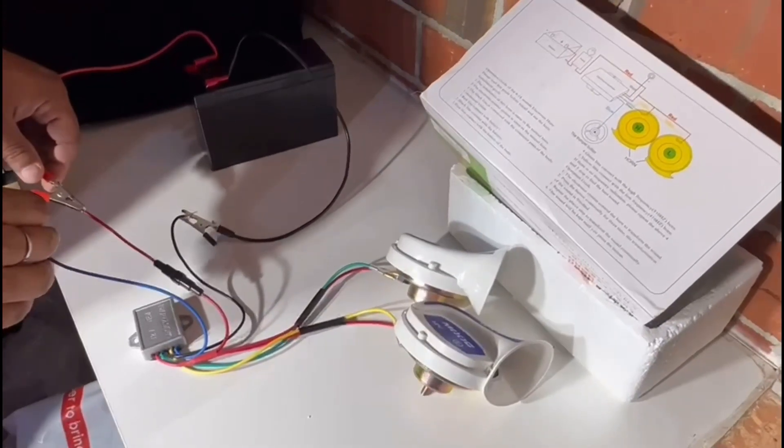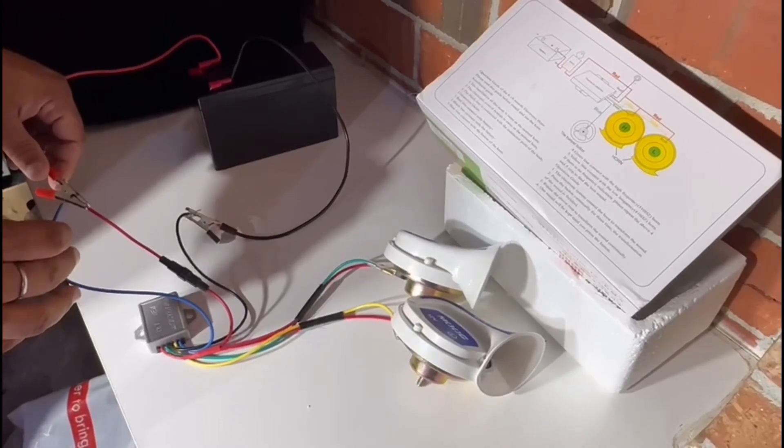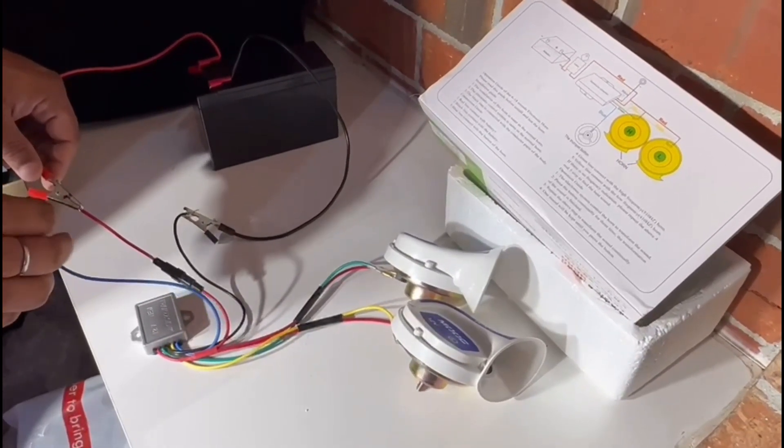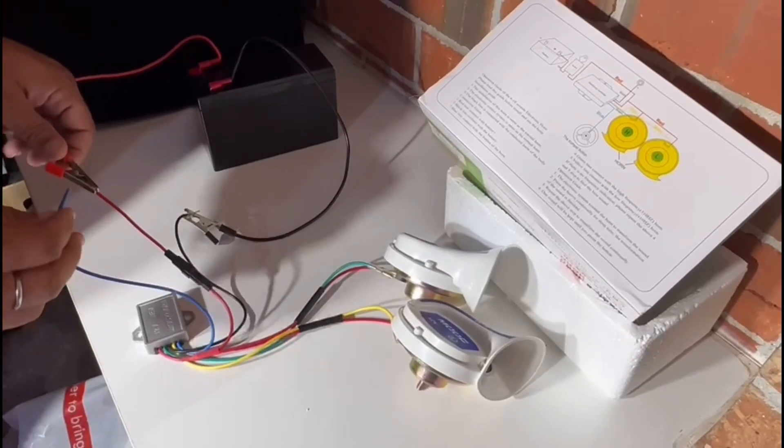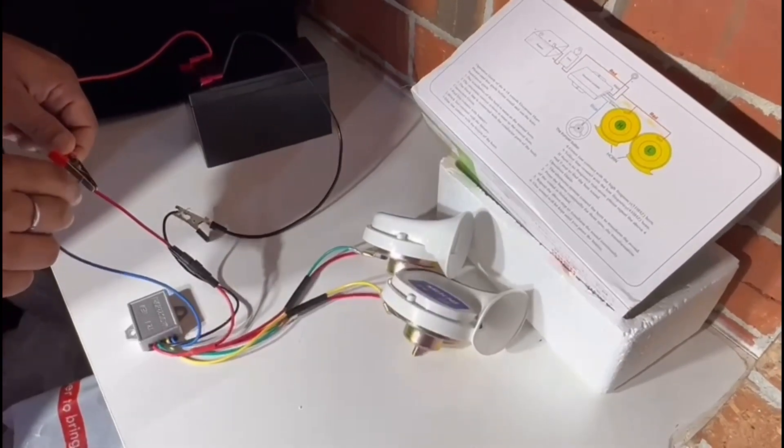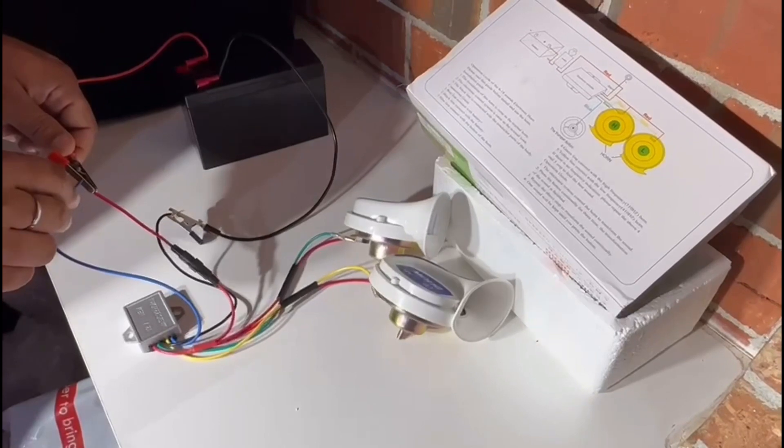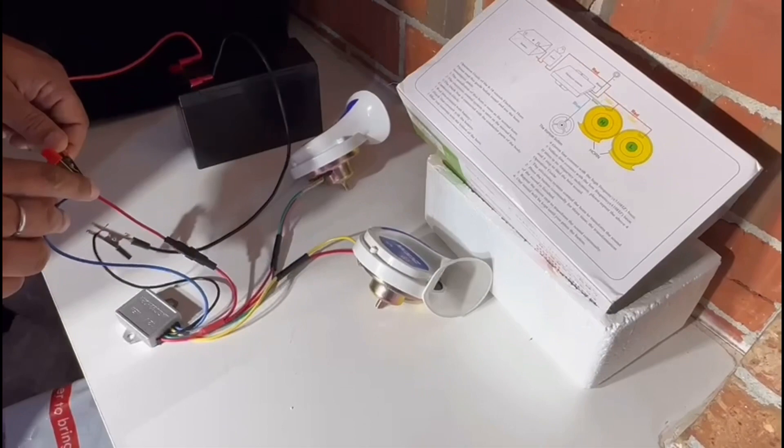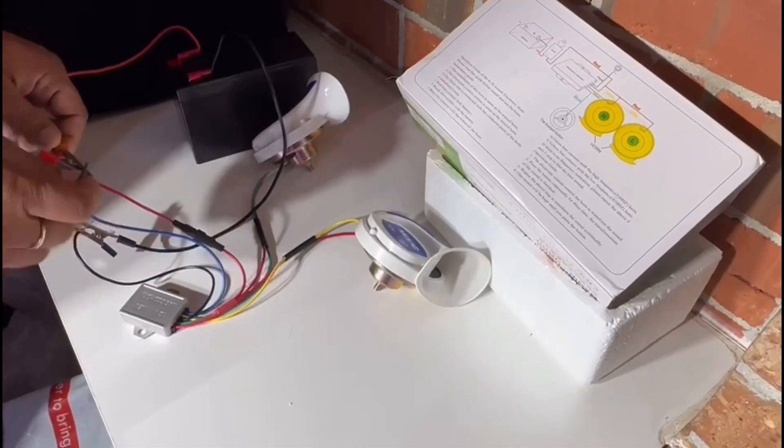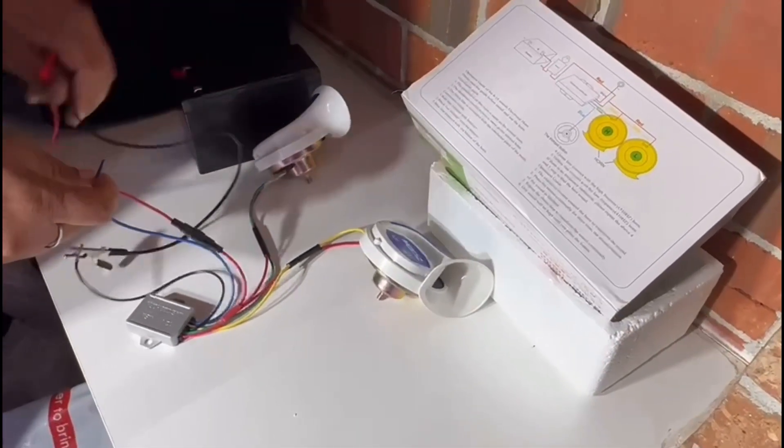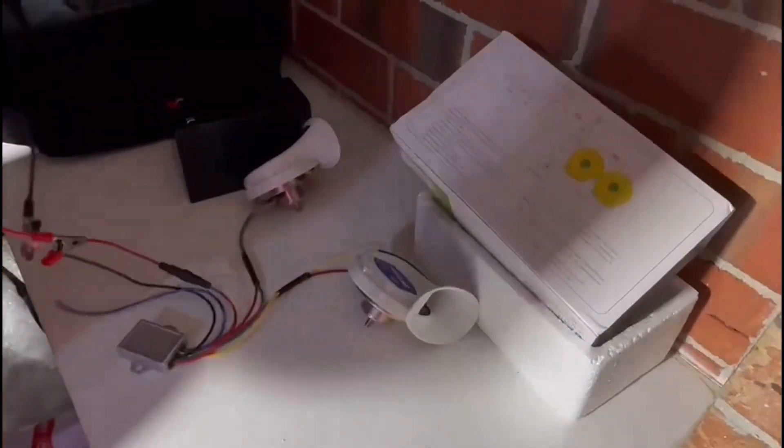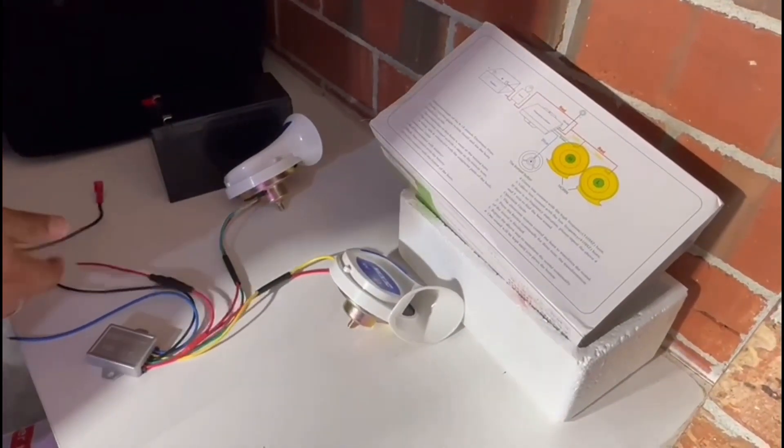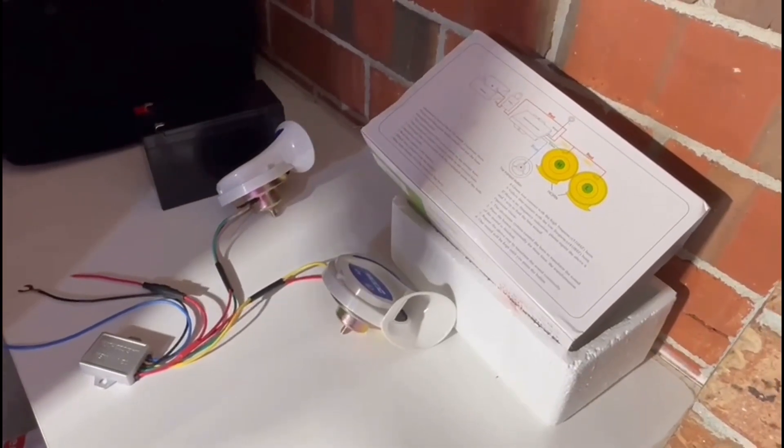It's got 18 different sounds. You can change the melody by pressing your horn button three times - the sound will change. I'm using wire, so I'll press it three times. You can see how they work, and you can check all 18 music melodies on YouTube on our channel.